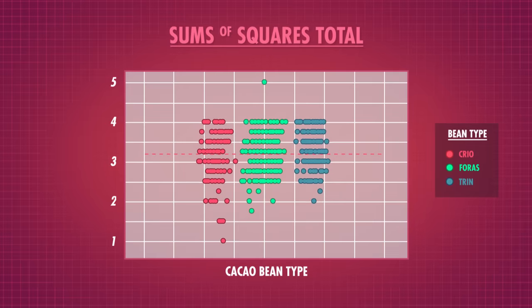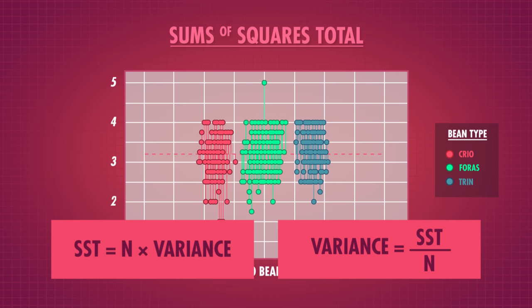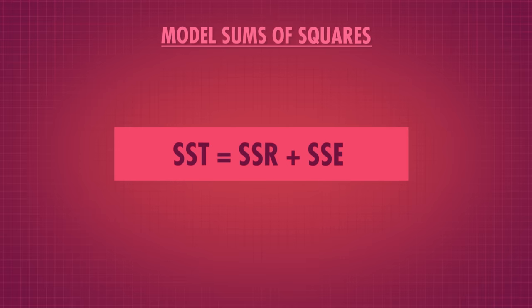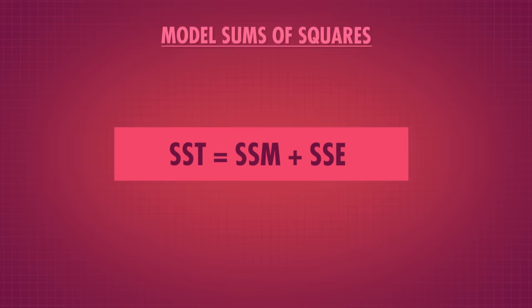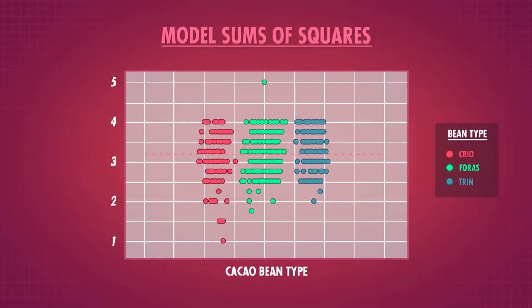Like regression, we can calculate the sums of squares total by adding up the squared differences between each chocolate rating and the overall mean chocolate rating. This gives us our sums of squares total, or SST. SST is just n times variance, and represents the total amount of variation, or information, in the data. Now we need to partition this variation. When we previously used a simple linear regression model, we partitioned this variation into sums of squares for regression and sums of squares for error. The ANOVA does the same thing. The first step is to figure out how much of the variation is explained by our model — in an ANOVA, our best guess of a chocolate bar's rating is its group mean.